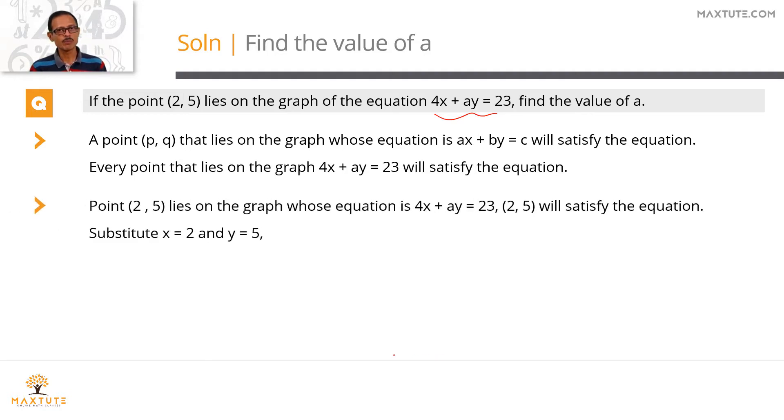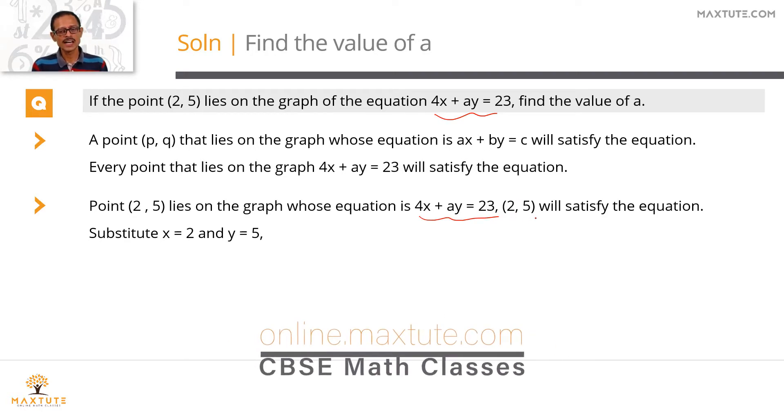We know (2, 5) is a point on this graph. This graph is essentially a line. (2, 5) is a point that lies on this line whose equation is 4x plus ay equals 23. So substituting x equals 2 and y equals 5 in this equation will satisfy the equation. So let's do that.